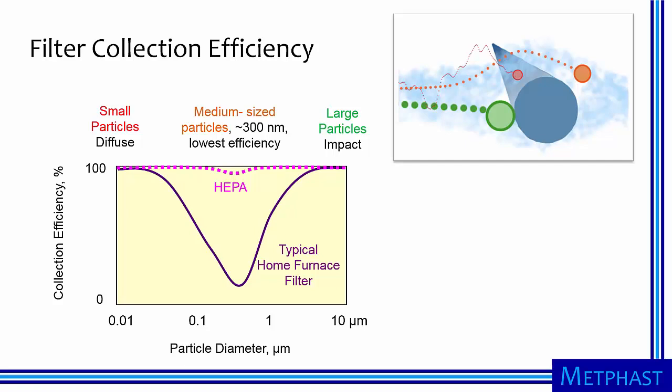In contrast, some filters, known as high-efficiency particulate air filters, or HEPA filters, shown in magenta, are designed to have high collection efficiency. Even for these filters, however, the lowest collection efficiency occurs for particles with a diameter of 300 nm, a size associated with low diffusion and inertial forces. With good design, collection efficiency of a HEPA filter is typically 99% or greater, even for particles of this size.